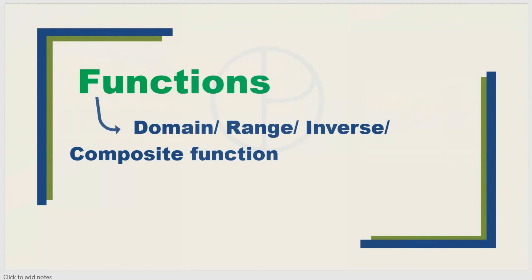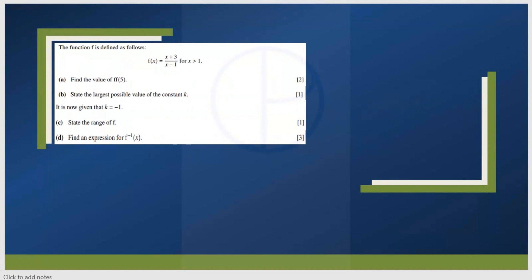Next is functions. You will get questions about the domain, finding the range of the function, or finding the inverse — f inverse, g inverse — and you will have questions related to composite functions like fg(7). For example: find the value of f(5), state the largest possible value of the constant k, state the range of f, find the expression for f inverse of x. Sometimes you will also get questions from transformation of functions combined with this. From functions you will get around a 6 to 8 mark question.